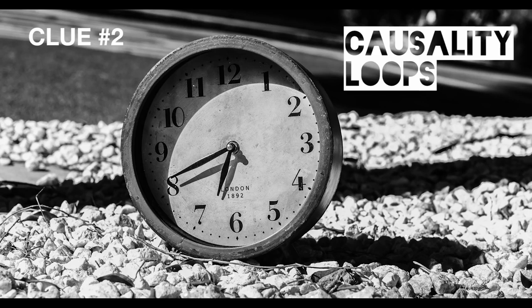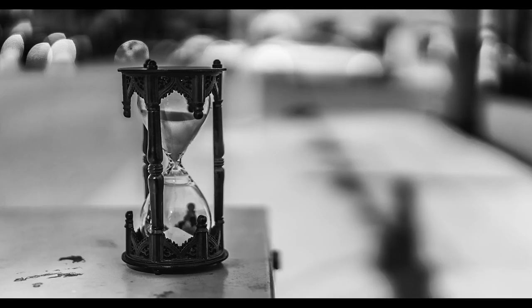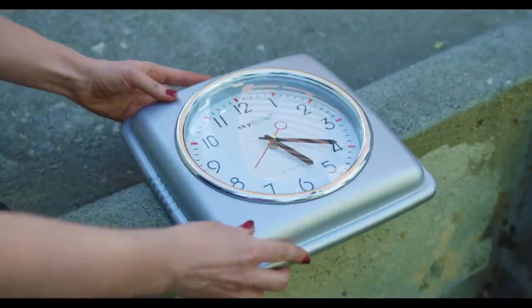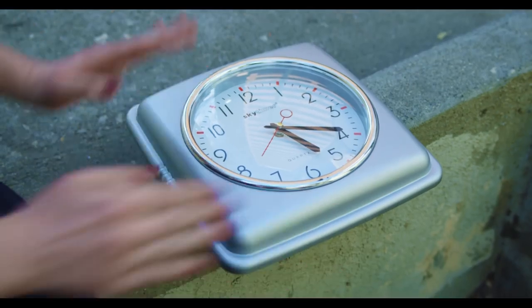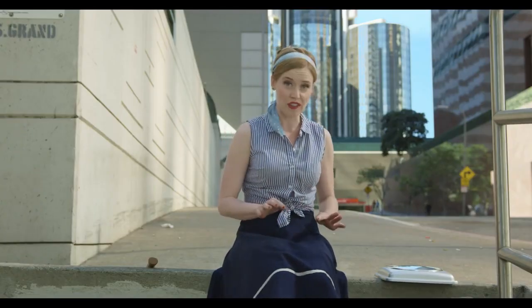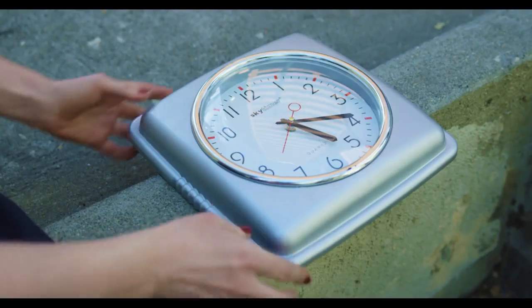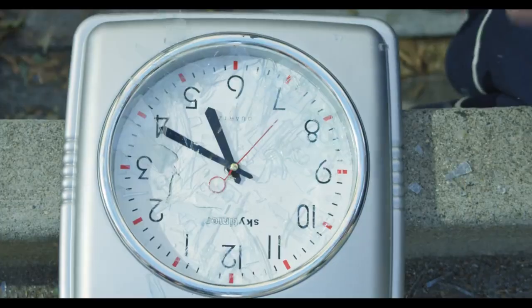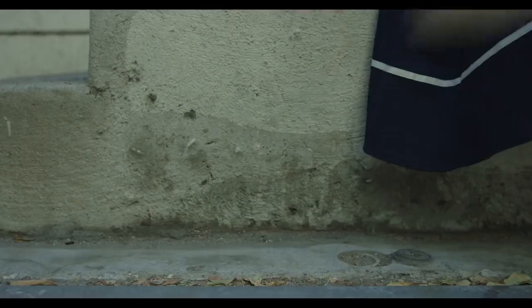Einstein showed how the past and the future exist simultaneously in one geometric object — so all time exists all the time. That sounds counterintuitive, but mathematically and according to the best physics formulas we have, that actually makes sense.